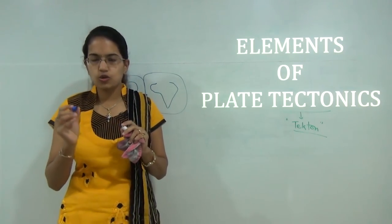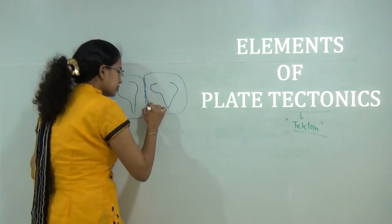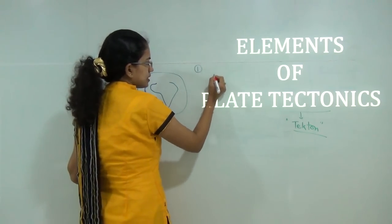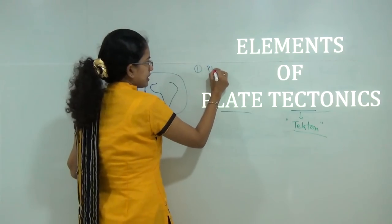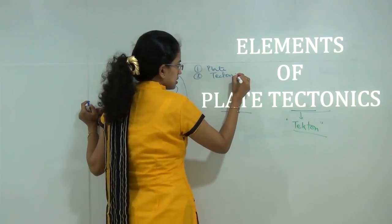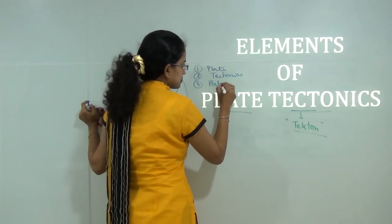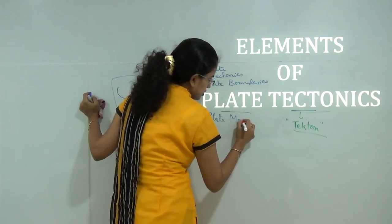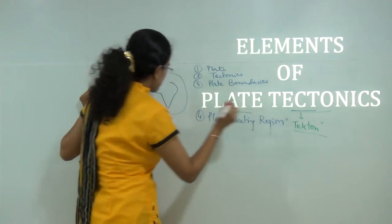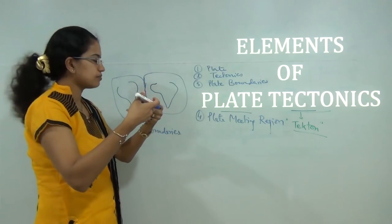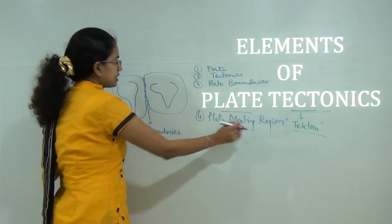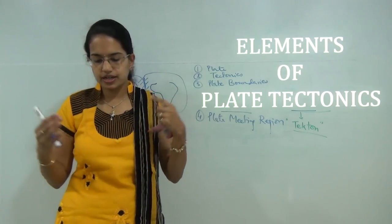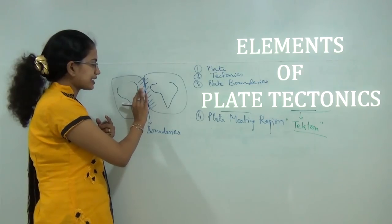Wherever the plates are meeting you have regions known as plate boundaries. The key terms to be familiar with are: plate, tectonics, plate boundaries, and plate meeting regions. When I say boundary it includes a narrow portion where the plates are simply meeting or touching one another. When I say plate meeting region, it includes a broader area which incorporates a much broader region and talks more about the characteristics of that region.